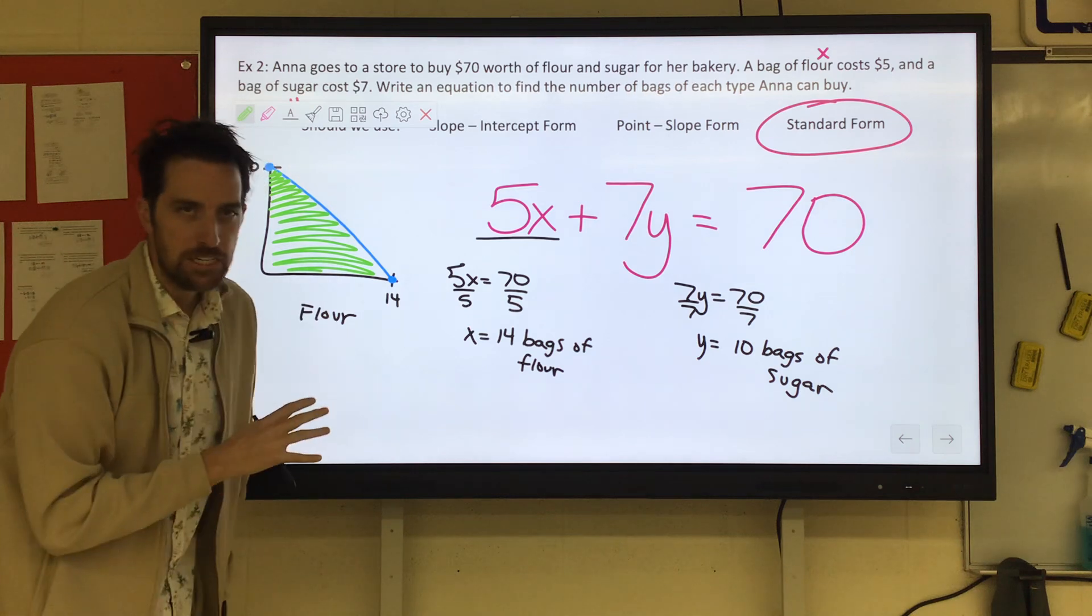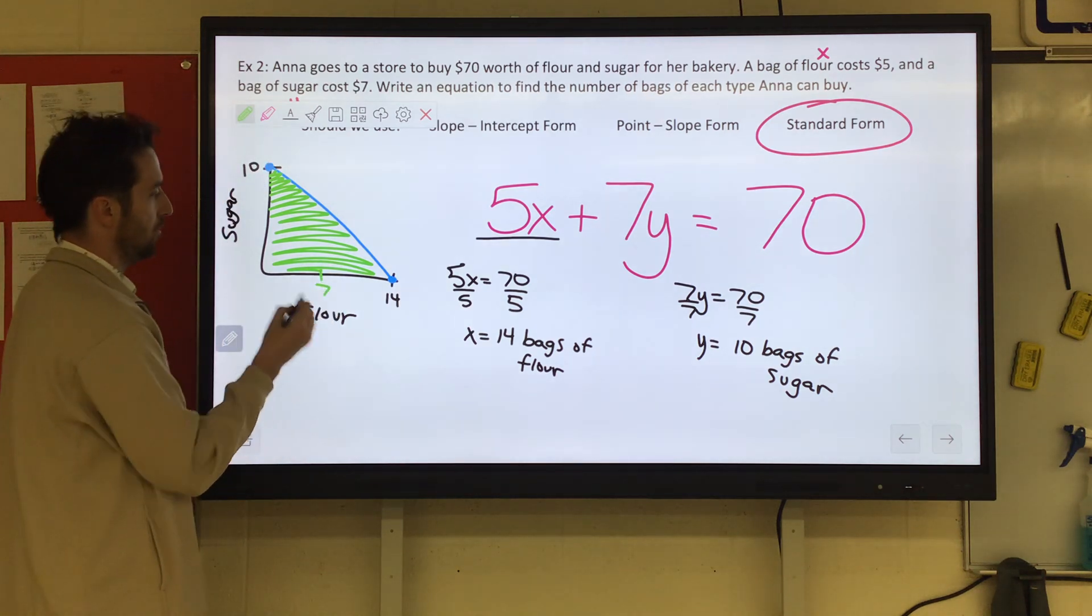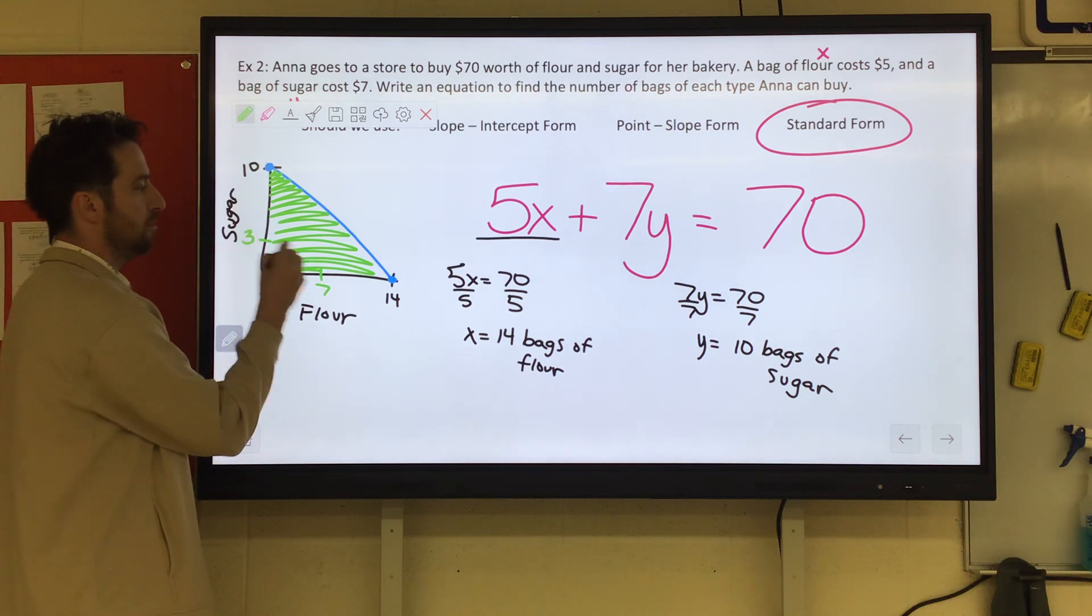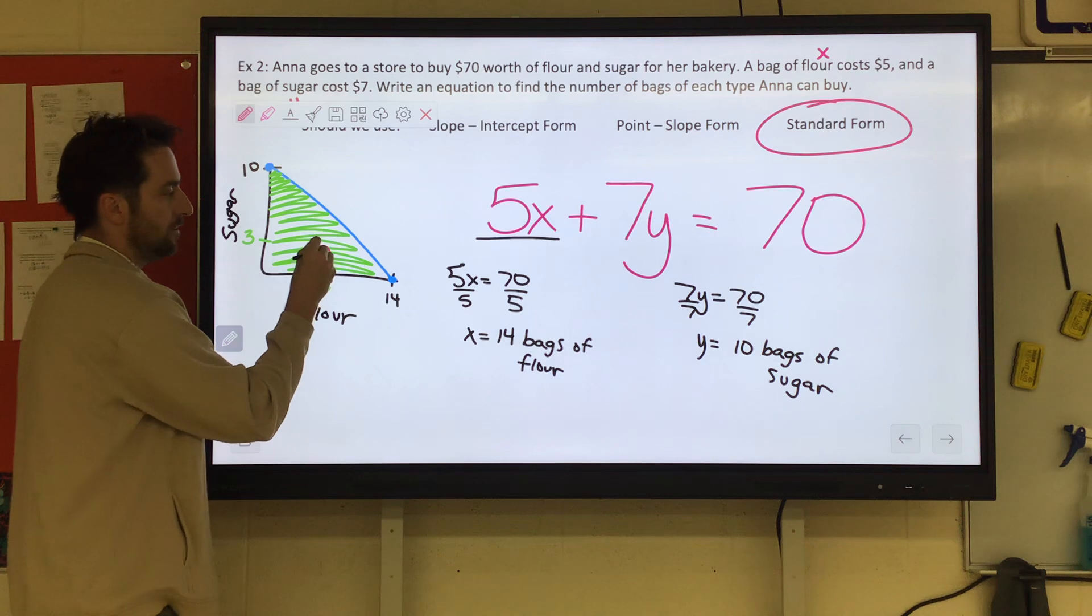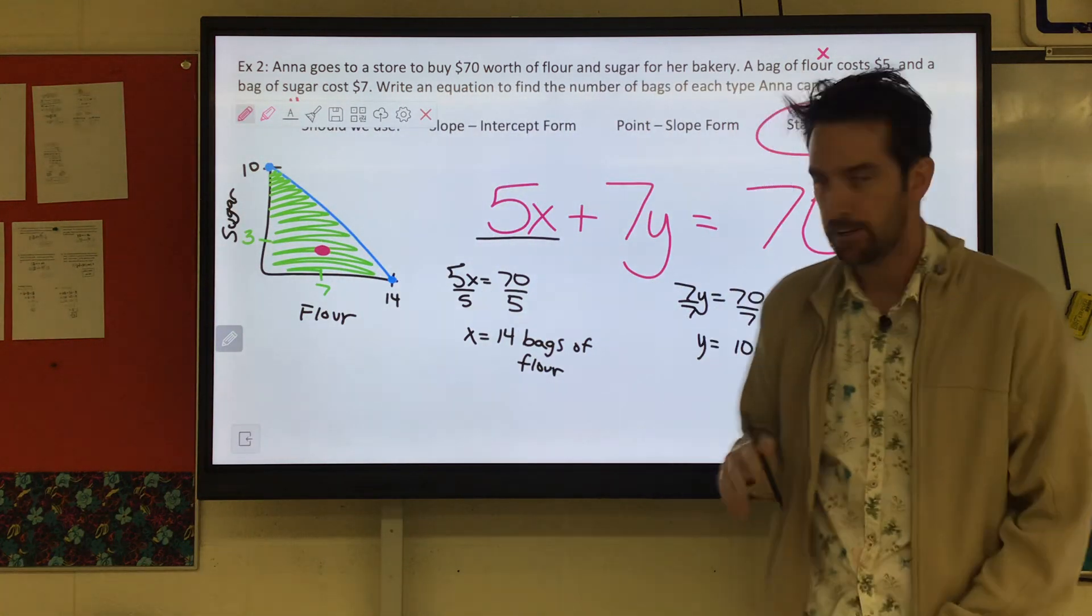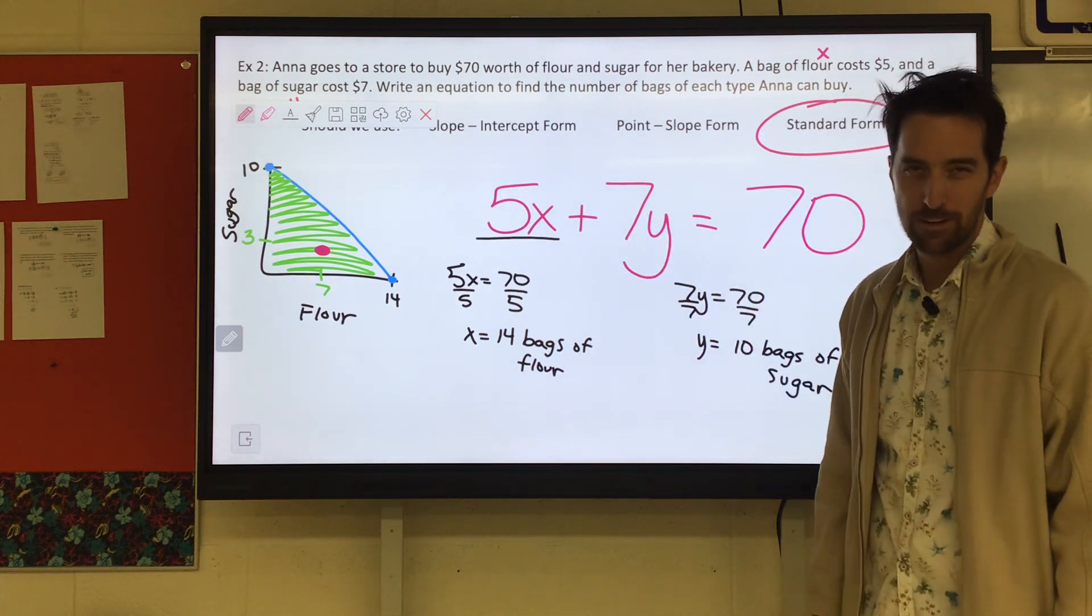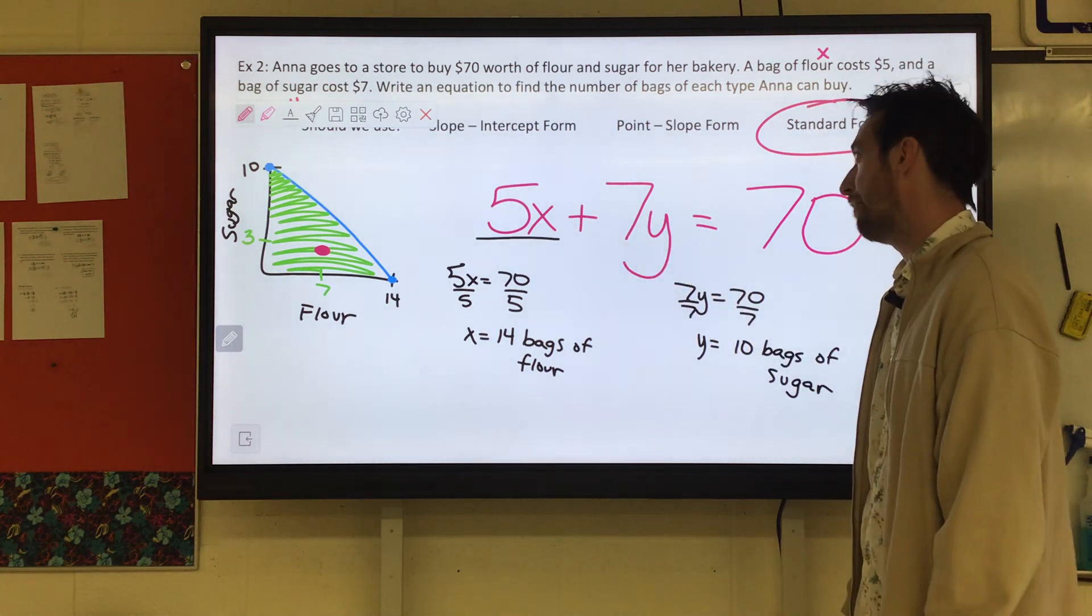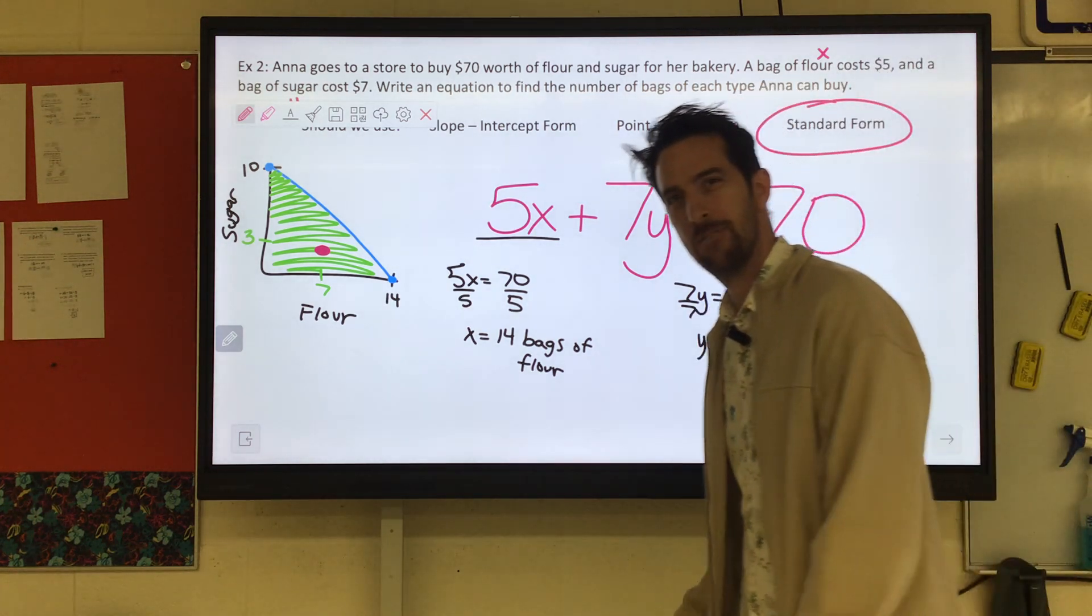Now that would max out the $70. So anything under this line is what a combination that we could afford. Now it's not perfectly to scale, so I don't know, but you could say like, oh, you could buy seven bags of flour and three bags of sugar. That would fit on the graph. It would be in there. And you could check that mathematically as well, algebraically. You could substitute those values in. Now all they needed from us was 5x plus 7y equals 70. That's it. But we're cooler than that, man. Come on.